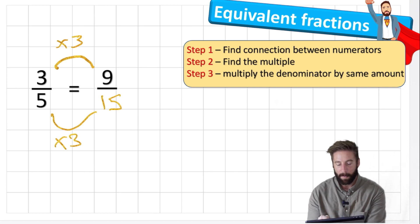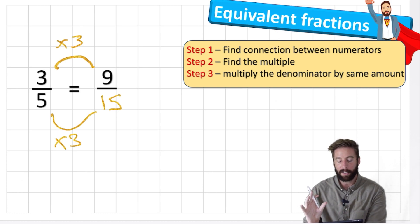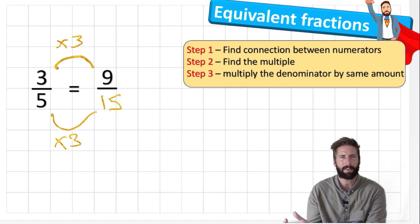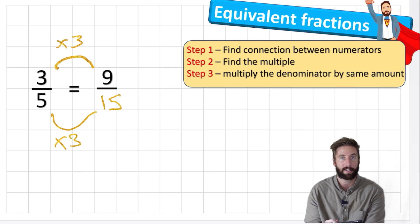A couple of important points. First, one really important rule: to keep fractions equivalent, we must do the same process to the top as we do to the bottom — whether we times by a million, divide by five, or times by two, we do the exact same thing to both numerator and denominator. Second, why do we need to find equivalent fractions? We'll get into that more throughout this fraction series — when adding or comparing fractions, we sometimes need the same denominators or numerators, and finding equivalent fractions is how we do that. Our next lesson will be how to compare fractions.